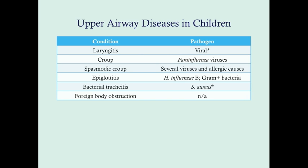We'll talk about other things like laryngomalacia and tracheomalacia elsewhere. With croup, the number one most common pathogen is the parainfluenza virus. In common with laryngitis, it is a viral cause. However, compared to something more severe like epiglottitis — which can also present with stridor, the characteristic feature of croup — this is not caused by a bacteria; it is caused by a virus.